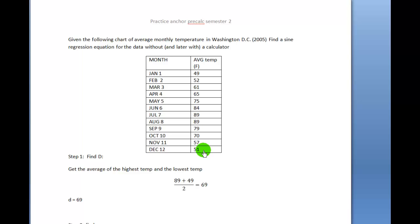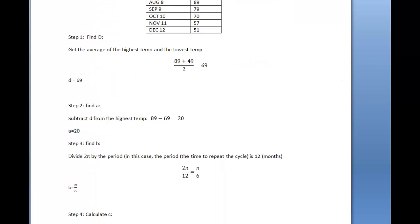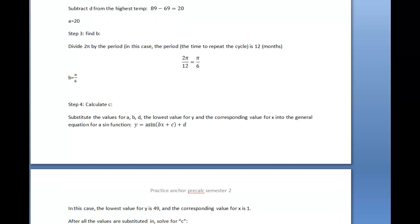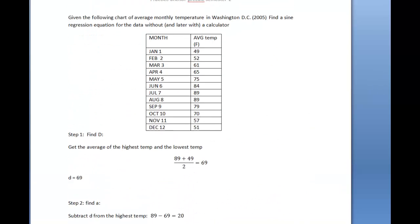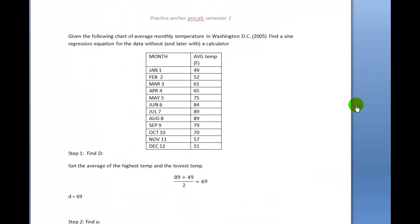First we're going to find D. We're going to use the general equation: y equals a times the sine of bx plus c plus D. The first thing we're going to do is find D, which is the center line for the sine regression.